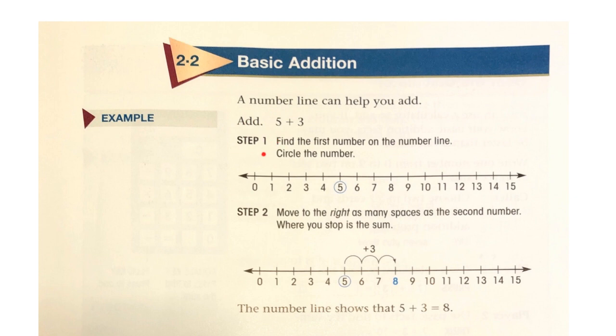Step 1, find the first number on the number line and circle the number. In this case, 5. So here's 5: 1, 2, 3, 4, 5. So we circle that on the number line.